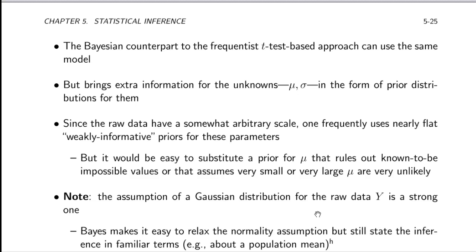The Bayesian counterpart to the frequentist t-test can use the same model — unknown parameters mu and sigma, data from a normal distribution — but it allows other information to be brought in as prior distributions or prior knowledge about the two unknown parameters. The raw data have an arbitrary scale, unlike when estimating a probability or odds ratio. When something can take an arbitrary scale, we frequently use a nearly flat — weakly informative — prior for these parameters, though a totally flat uninformative prior is also an option.